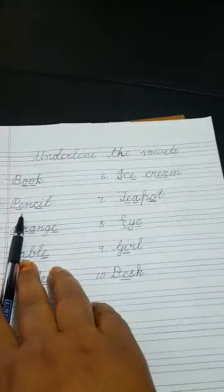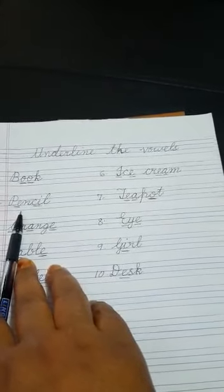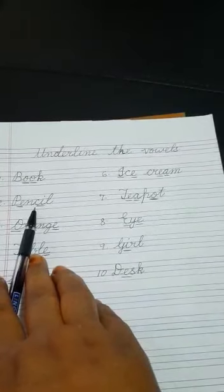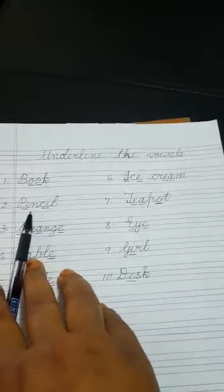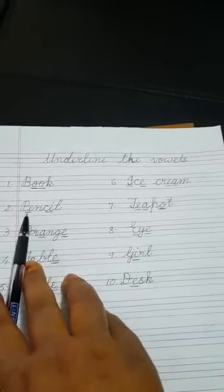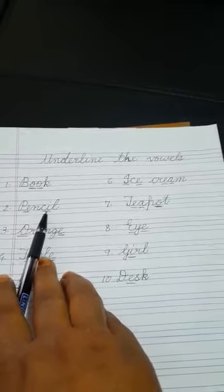Now number two. The word is pencil. So P, E, N, C, I, L. So here what are the vowels? E and I. So we will underline E and I.